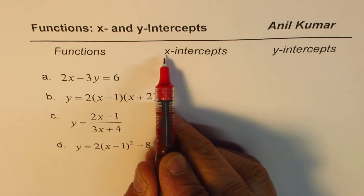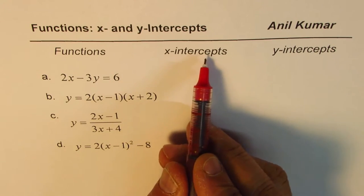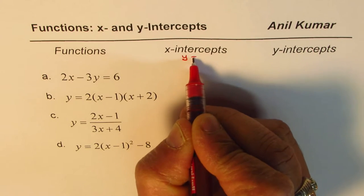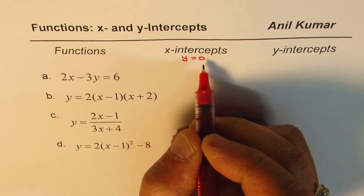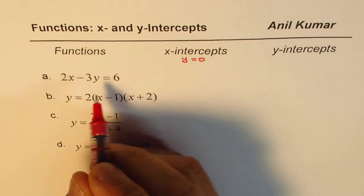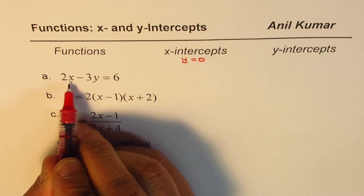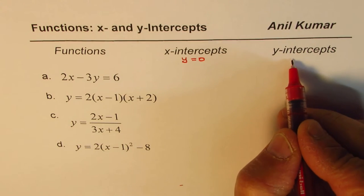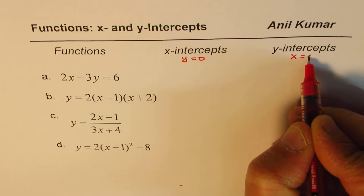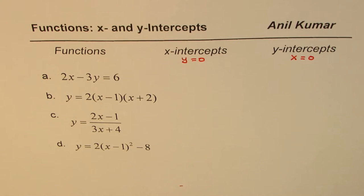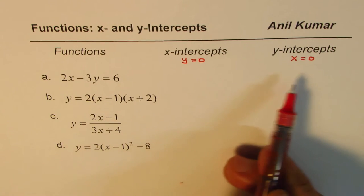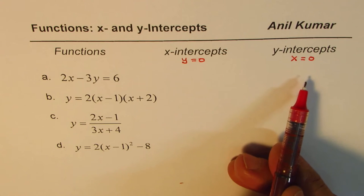Let's first understand when we get the x-intercept. At the x-intercept, the value of y is equal to 0. So if I substitute y equals 0 and solve for x, I'll get the x-intercept. For the y-intercept, we substitute x equals 0 — as simple as that. So we are going to solve these equations and find out their x and y intercepts.